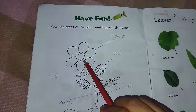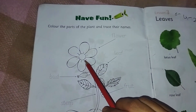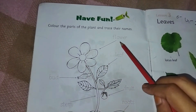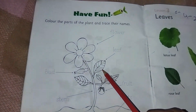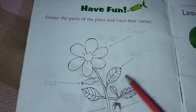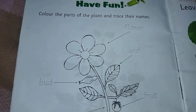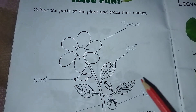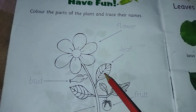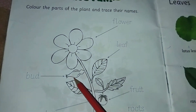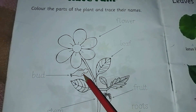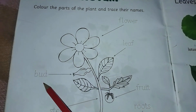What is this? Yes, it's a flower. What is this? Think deeply. It is a leaf. And what is this little one? It is a bud.